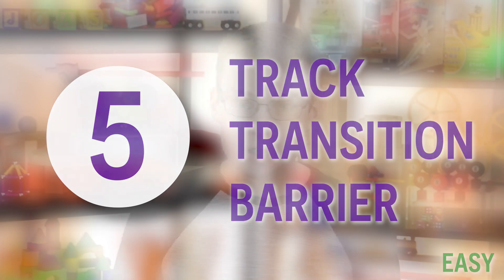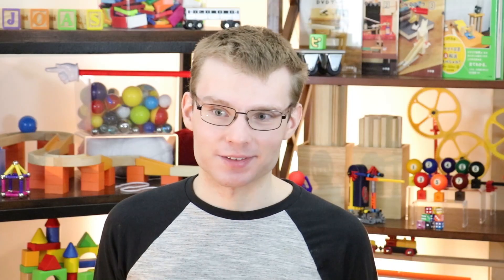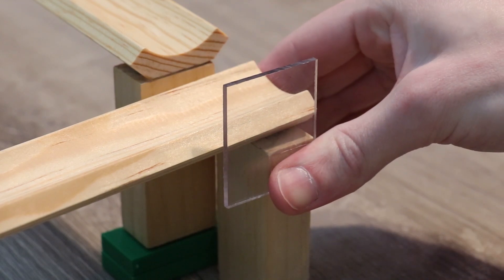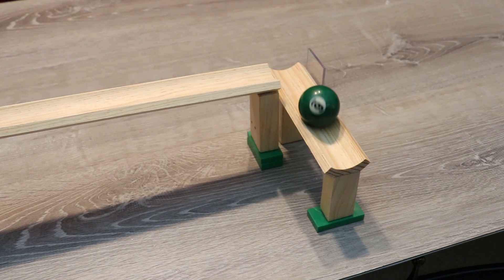All right, next on our list is a very simple mechanism, but an absolutely essential one to know. The track transition barrier. Arguably the two most common machine materials are balls and tracks, and just about the only way that that can go wrong is like this. So yeah, the solution is, let's say, self-explanatory, but adding the proper barriers to your machine to control the range of motion of the free-moving objects as much as possible is super important, and it goes such a long way towards reliability and, in a lot of cases, aesthetics. And the track transition barrier, as simple as it is, is one of the most fundamental ways of doing that.